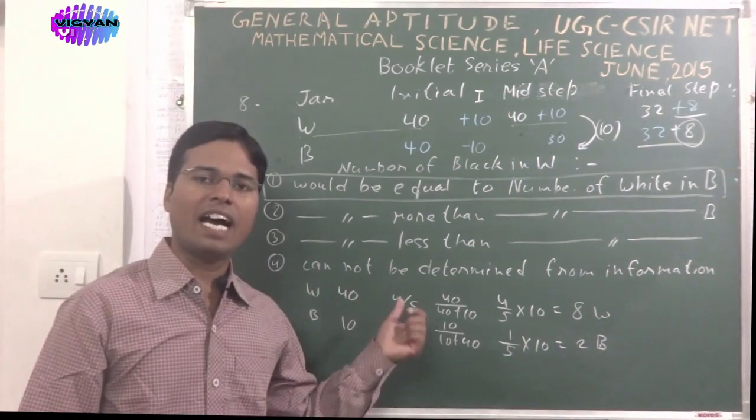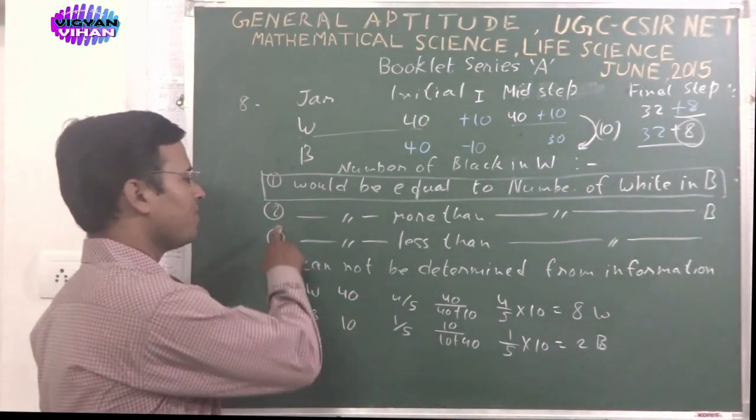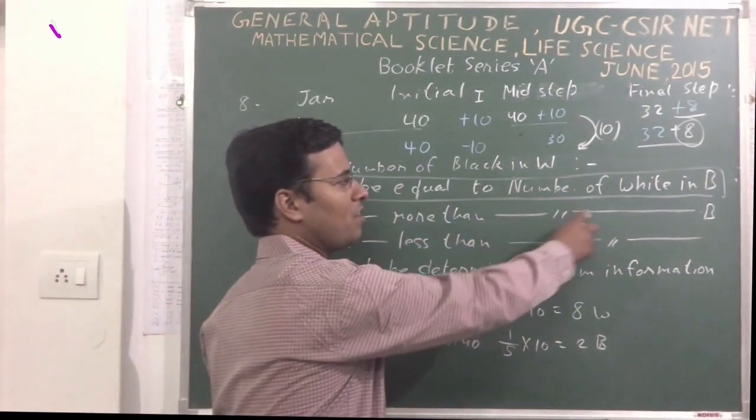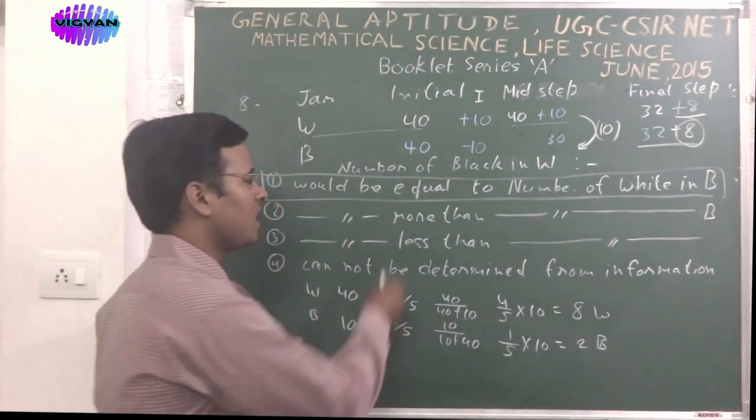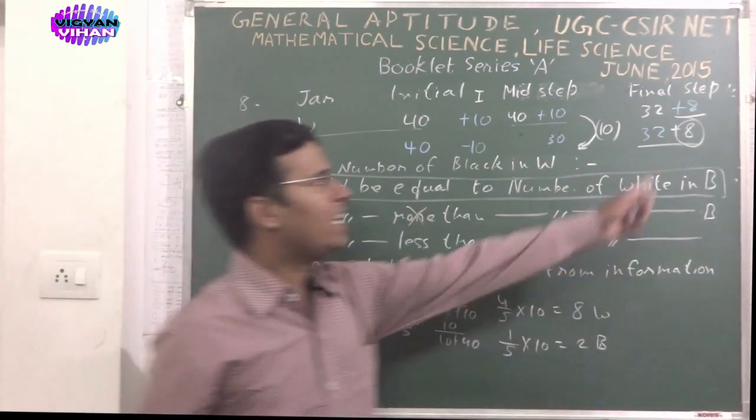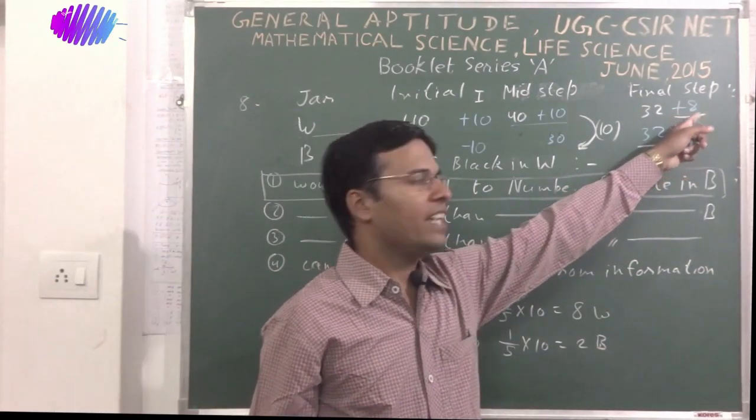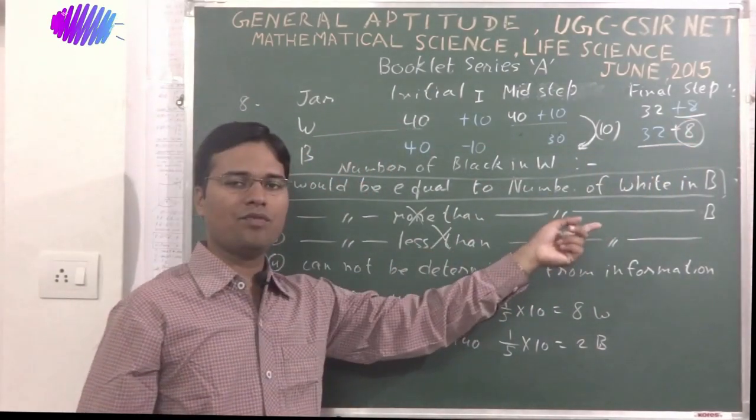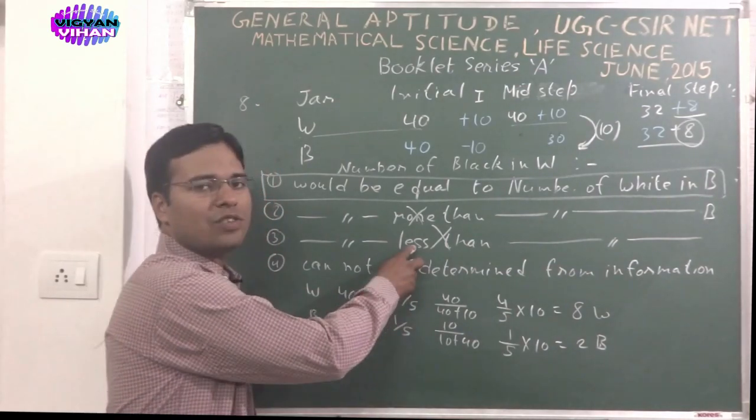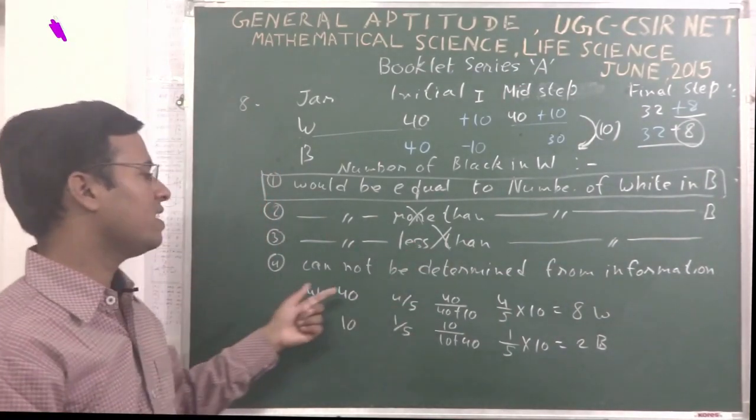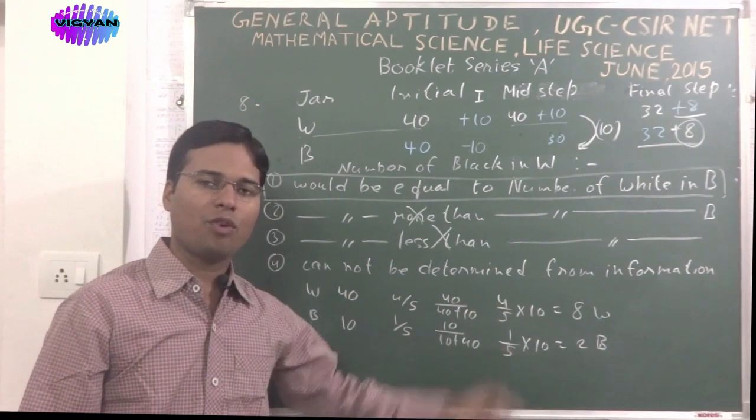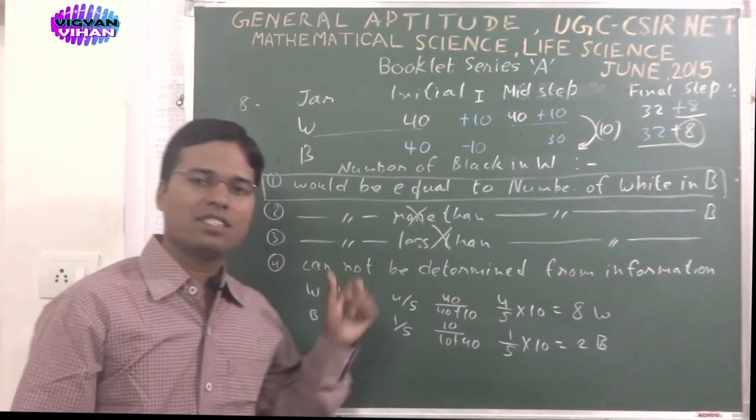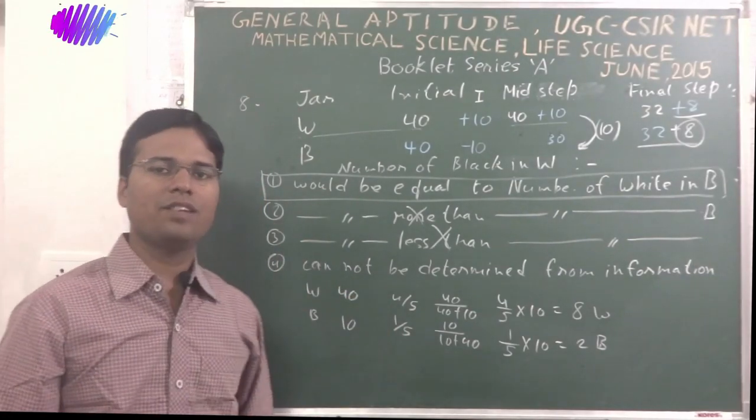All the other options are meaningless here because in the second option, it would be more than number of white in B. No chance because there are two equality conditions in white and black jar W and B. Less than number of white in B, this is also meaningless in third condition. Cannot be determined from the information, it is also an absurd statement. So the correct answer is option 1.